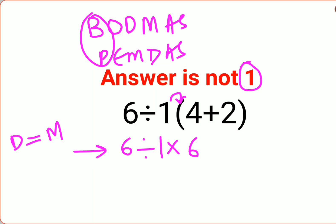Whatever operation happens first on your left hand side has to be done first. So 6 divided by 1 is 6, multiplied by 6. The answer for this question is supposed to be 36.